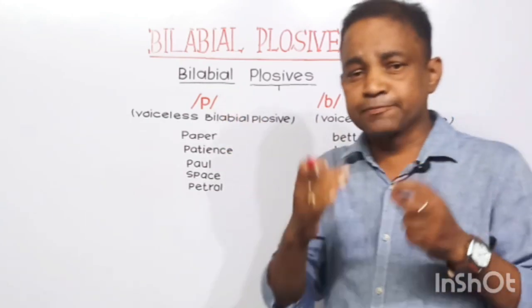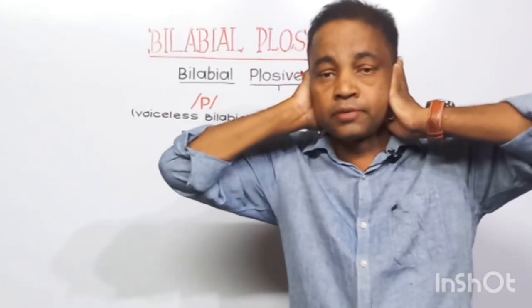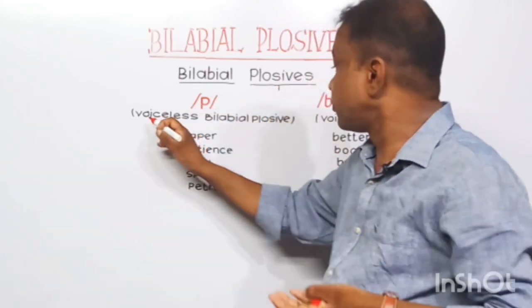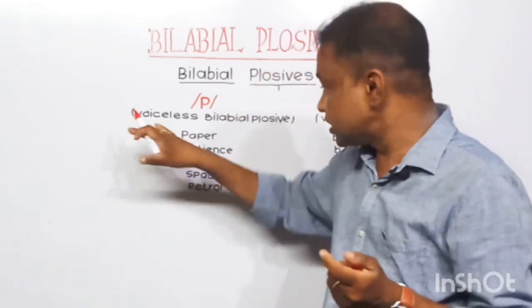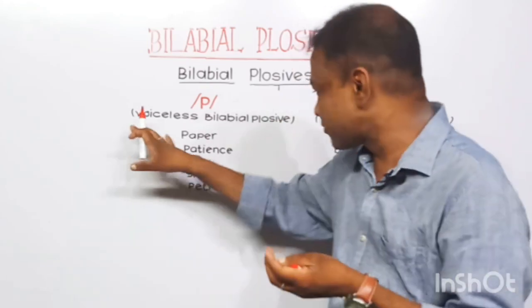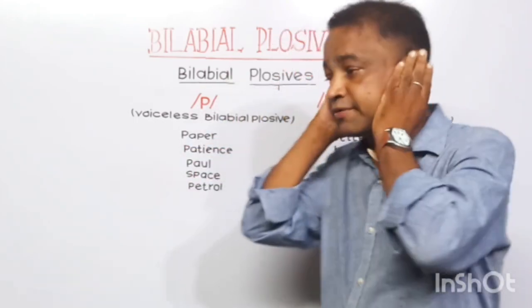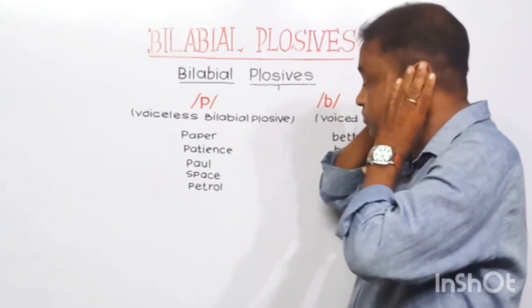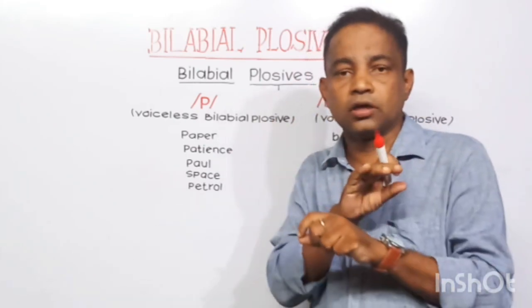Now we are going to discuss two plosives: /p/ and /b/. Let us produce the sound /p/. Put your palms on your ears and try to say the sound /p/. Did you feel any vibration? No, because your vocal cords do not vibrate. If vocal cords do not vibrate, this is called voiceless. Since two lips are brought together when producing /p/, this is called a voiceless bilabial plosive. Practice words: paper, patience, pole, space, petrol. You did not feel any vibration because vocal cords do not vibrate.